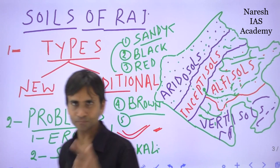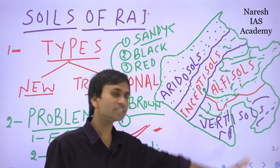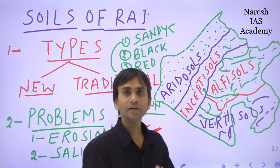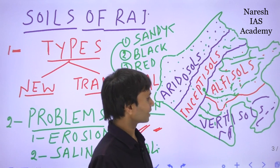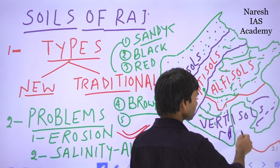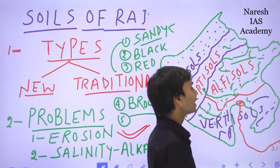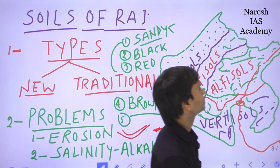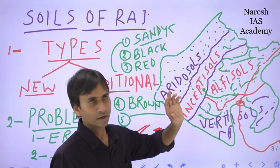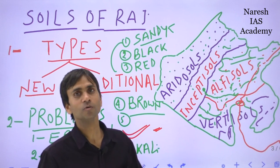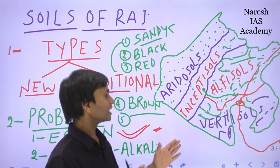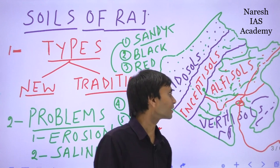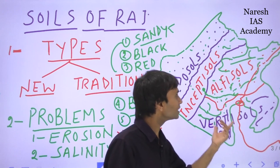Second is erosion by water. Many rivers flow through different districts of Rajasthan, but the Chambal river is very notorious for water erosion and ravine lands. Ravine lands are mainly created by the Chambal river, which originates in Madhya Pradesh and enters Rajasthan from the Chittorgarh district, flows through Kota, Sawai Madhopur, Karauli, and Dholpur before entering Uttar Pradesh. The land surrounding the Chambal river is not fertile and is sometimes called wasteland or ravine lands.